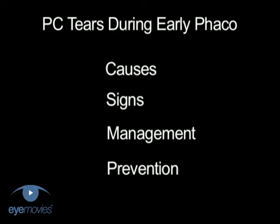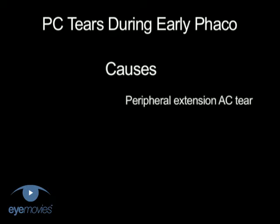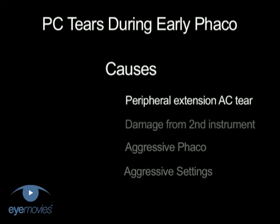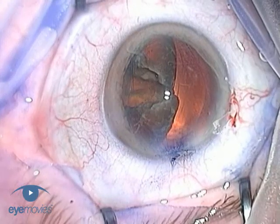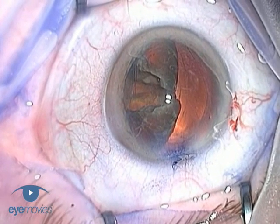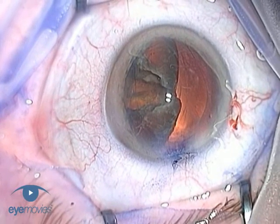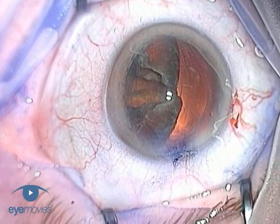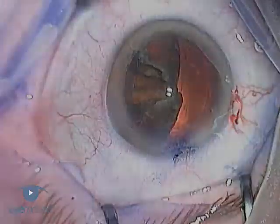When you analyse the underlying causes, there are really just four main mechanisms that lead to early posterior capsule rupture. Firstly is the peripheral extension of an undetected anterior capsular tear. Usually, the first thing you know about this is when the nucleus suddenly tilts and starts dropping backwards, rather reminiscent of a sinking ship as it upends before dropping to the ocean floor.